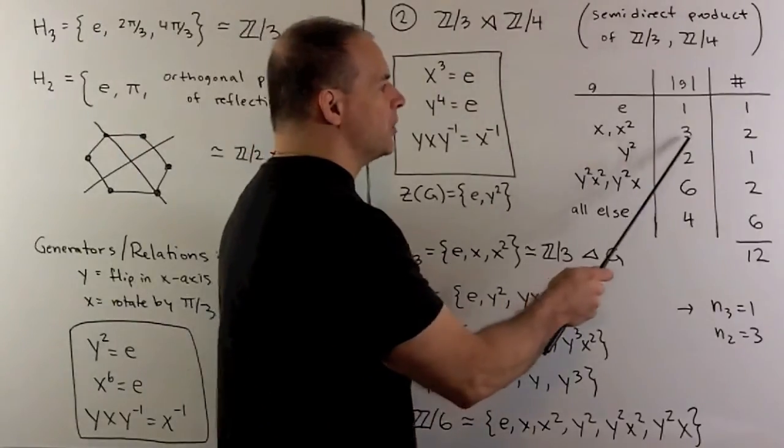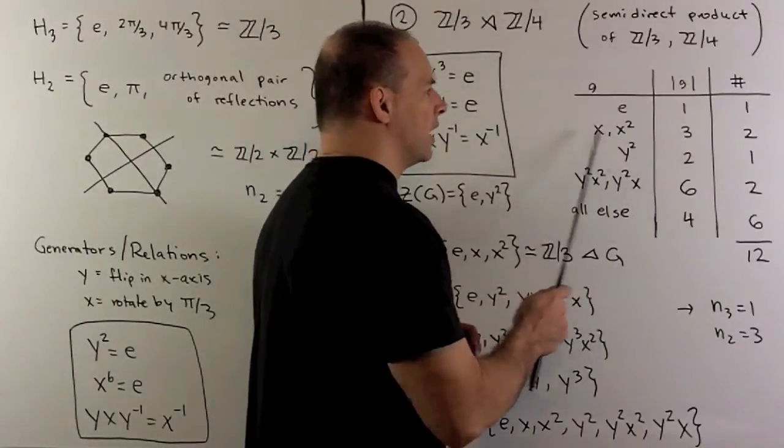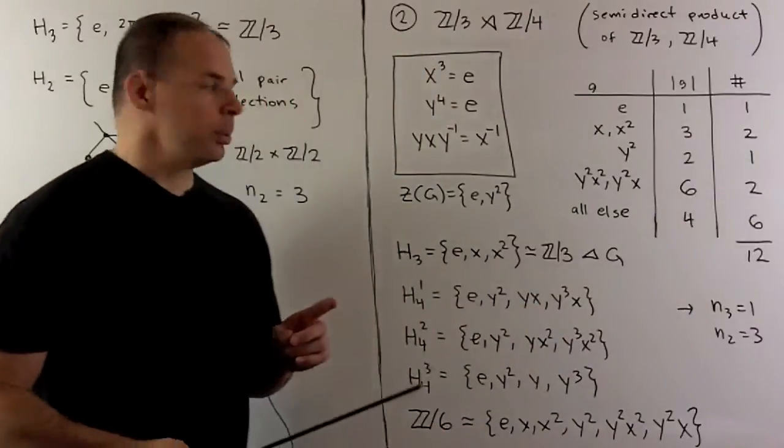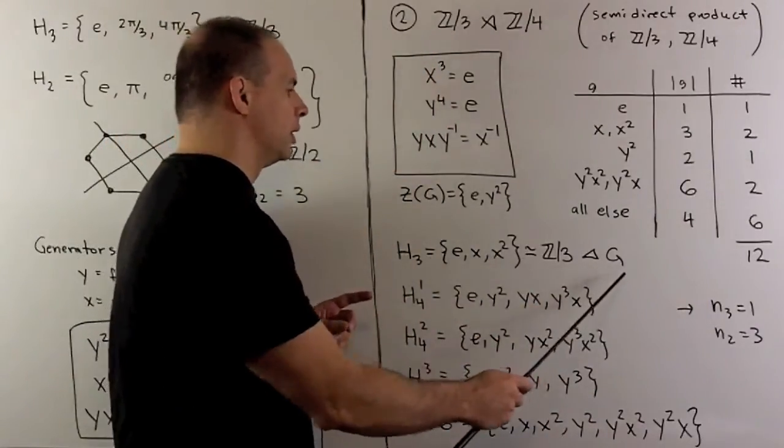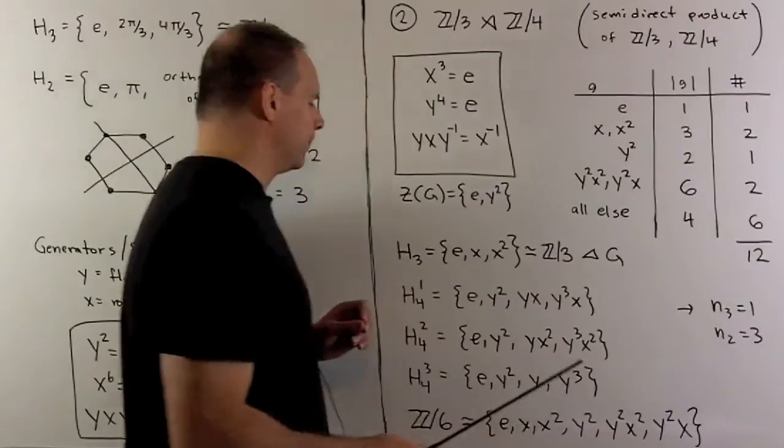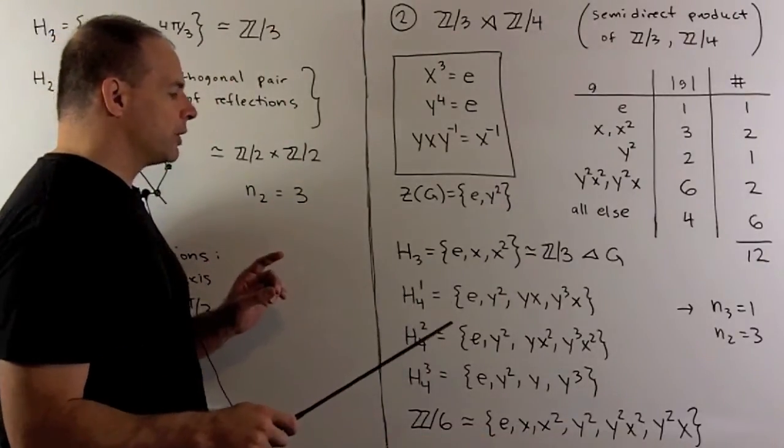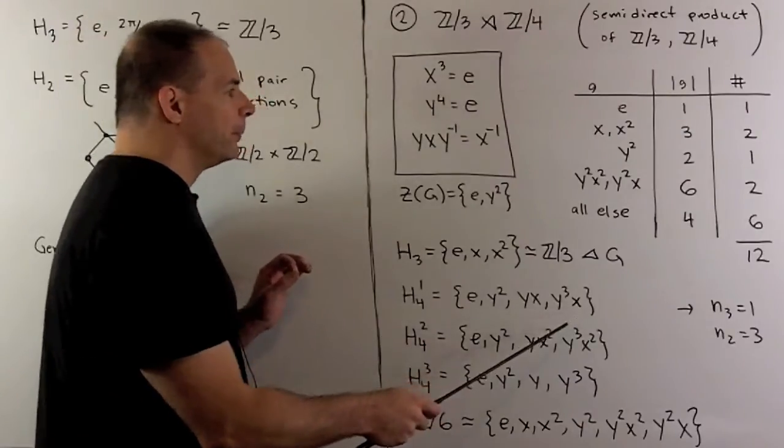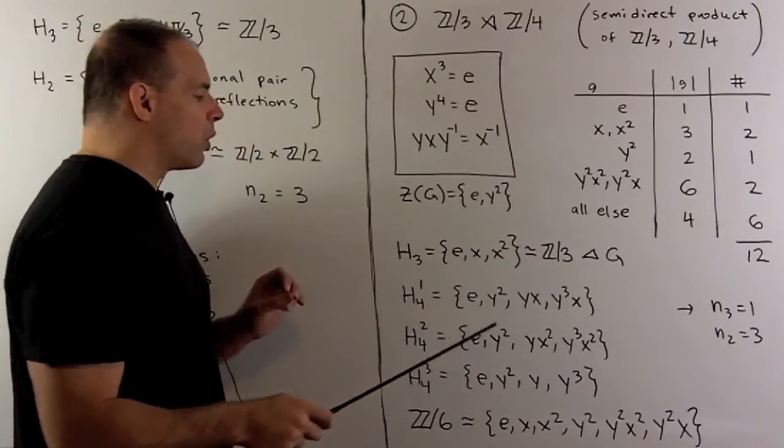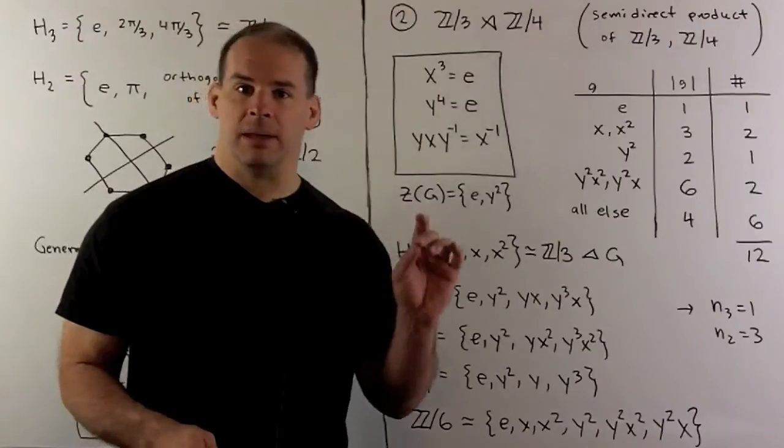The center is going to be given by the identity element and y squared. You'll note we only have enough elements of order 3 for a single Sylow 3 subgroup. So n3 equals 1. And if you work it out, we're going to have three Sylow 2 subgroups. Each is of order 4. Each contains an element of order 4, so they're all isomorphic to Z mod 4.